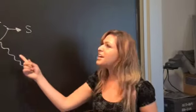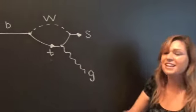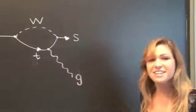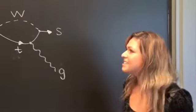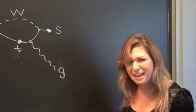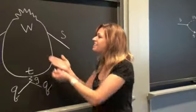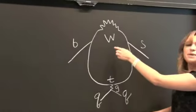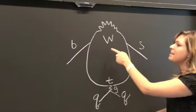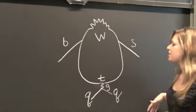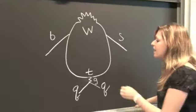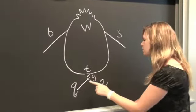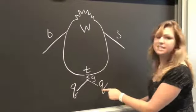So John Ellis looks at this, sees the circle, and thinks: can I turn this into a penguin? Here's the penguin. The W boson is the beak. The bottom and strange quarks are the wings. And the gluon turning into two quarks is the feet.